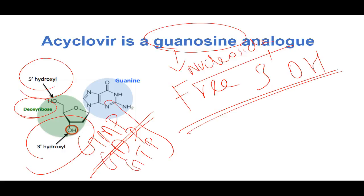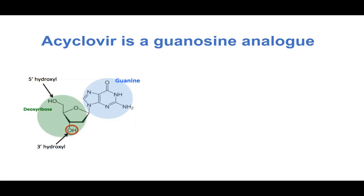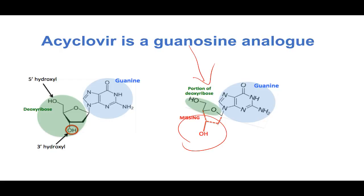With this basic biochemistry, let us go to the acyclovir mechanism. Acyclovir, see this is an analog of nucleoside, that is your guanosine, but the problem is the 3' OH group is missing.